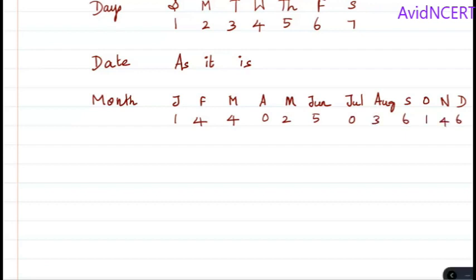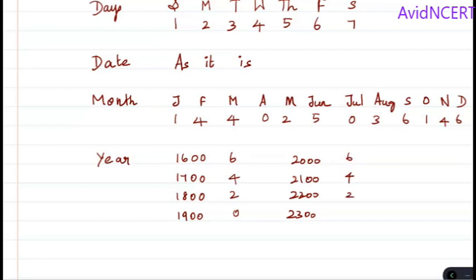And for the year, starts from 1600. Anything which is 1600, 1700, 1800, 1900, and 2000, 2100, 2200, 2300, it goes like this. You can either go like this: 6, 4, 2, 0, or 0, 2, 4, 6. You can remember in any way, whichever is easier for you.